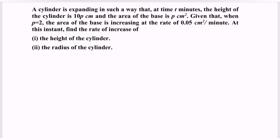A cylinder is expanding in such a way that at time t minutes, the height of the cylinder is 10p, meaning h is equal to 10p. And the area of the base is p, meaning that pi r squared for the cylinder is equal to p cm squared. Given that when p is equal to 2, the area of the base is increasing at the rate of 0.05 cm squared per minute.